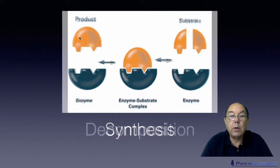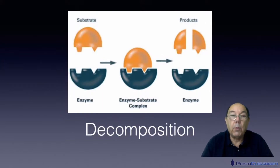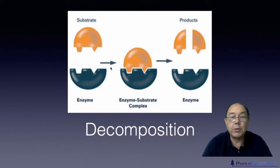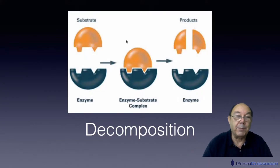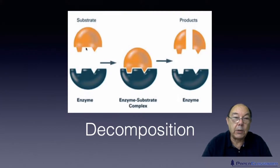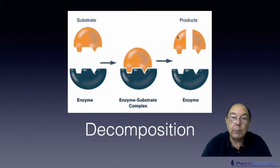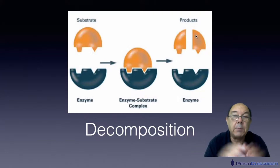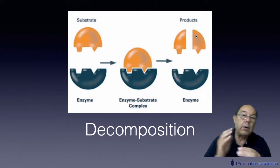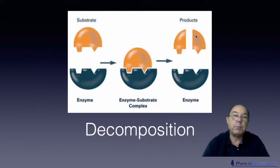But enzymes also work the other way around — they can be used to decompose material. All I've done here is flipped those two arrows around to give a new system. A material with a particular shape fits exactly into an enzyme, causing disruption of bonds and splitting it into two different compounds. So enzymes can be used to synthesize material by bringing things together, or to cleave bonds and split things up.